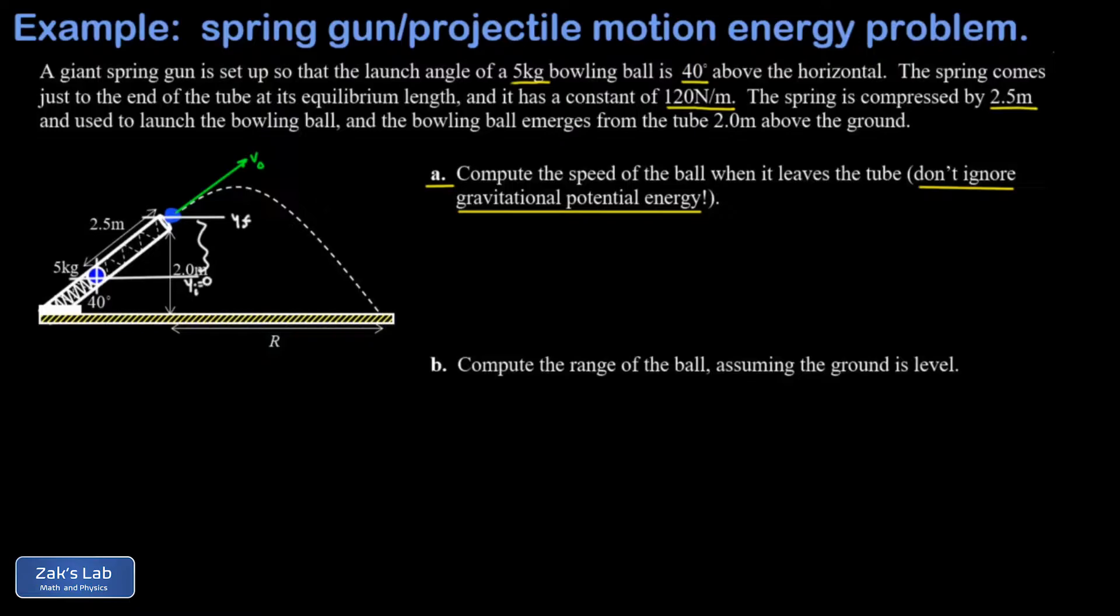That's just given by a leg of a right triangle where 2.5 meters, the compression distance, that's the hypotenuse. The angle here is 40 degrees, and 2.5 sine of 40 will give me that vertical change. I'll go ahead and pop that right into the diagram to three sig figs. That's 1.61 meters of increase in height during the launching process.